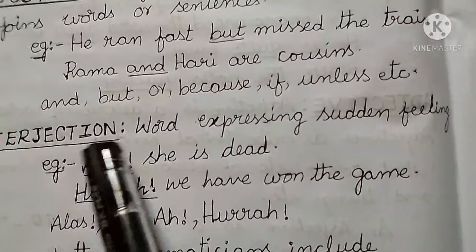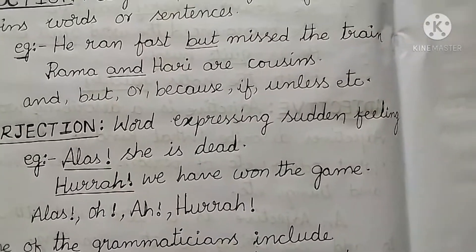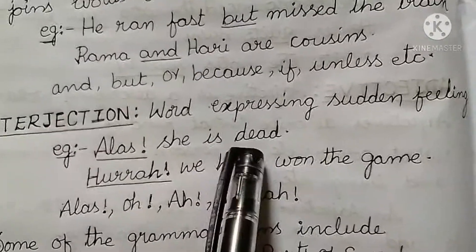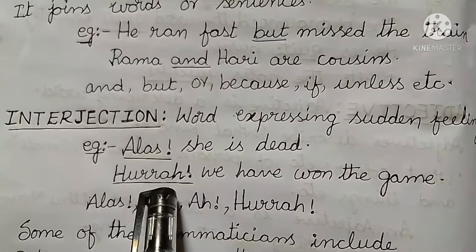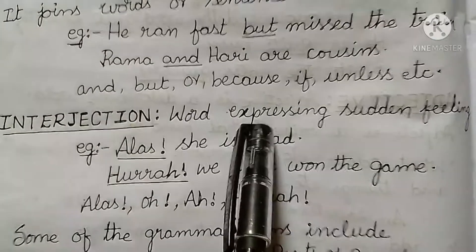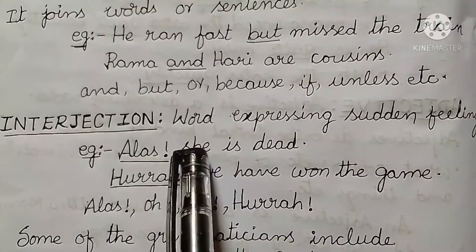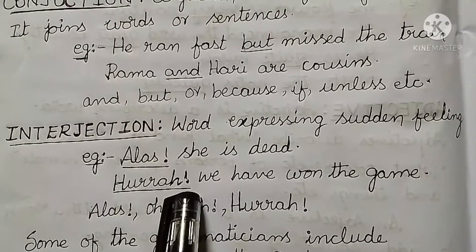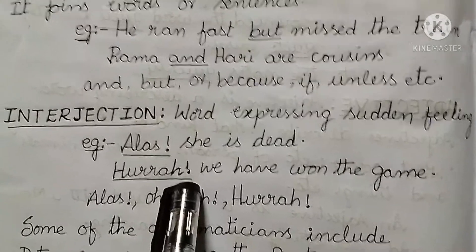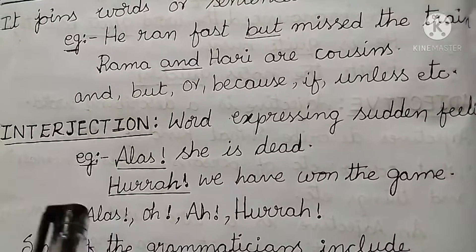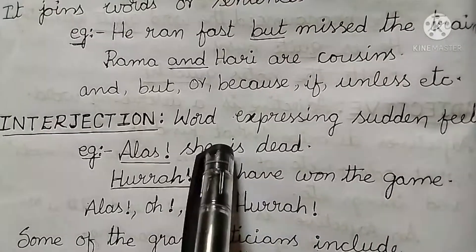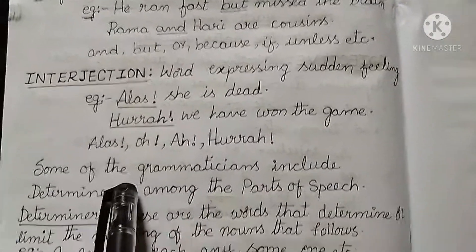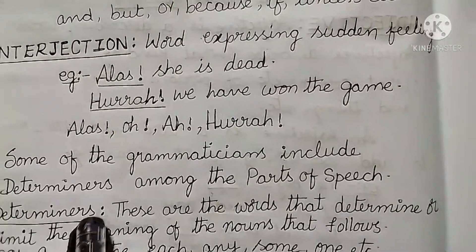And now, interjections — the last but not the least. The word expressing sudden feelings. An interjection is a word used to express our emotions and is often followed by an exclamatory mark. Examples: Ha, Ho, Wow, Oops. According to our mood — if you feel sad or happy — we use these expressing words. For example, 'Hooray! We have won the match.' We are in an excited mood. Alas, Ho, Ha, Hooray — these are all interjections.